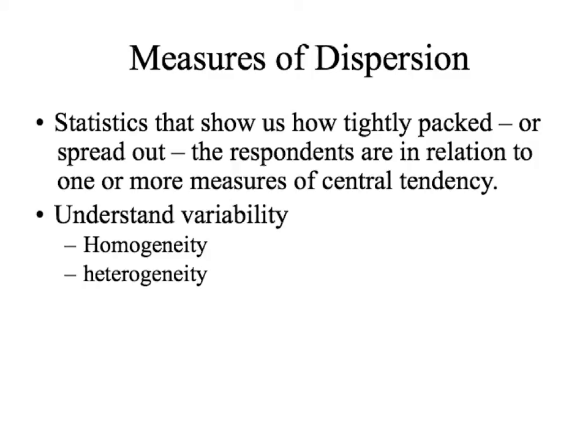In other words, how similar are our respondents, or how varied or different are they. So when we're looking at a sample, we can use measures of dispersion to help us understand that variability and spread of the distribution. We've already talked about measures of central tendency, which tell us the center point of the data. Now we're looking at how far out from the center the data are spread — and that's what our measures of dispersion help us find out.